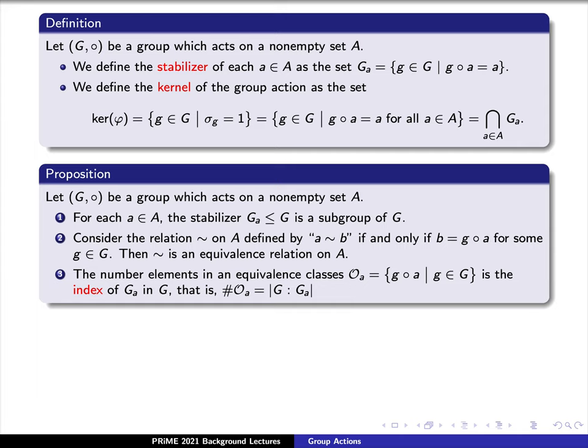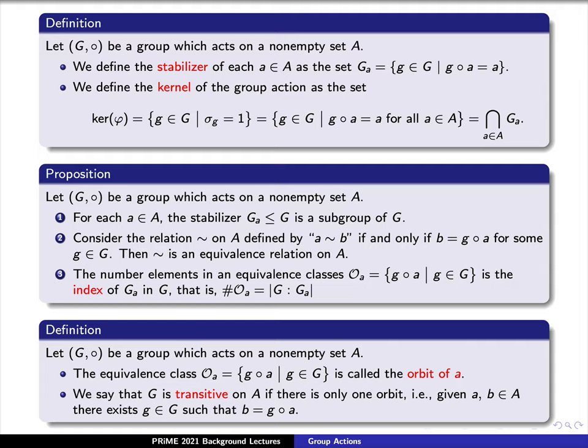Using this, here's a couple more definitions. Again, say that we have a group which acts on a non-empty set capital A. This equivalence class, script O sub a, is called the orbit of our element a. We'll say that our group G is transitive on the set A if there is only one orbit. That is, given two elements a and b in our set capital A, there exists a g in our group capital G such that b equals g times a.